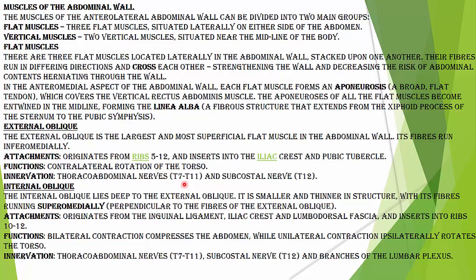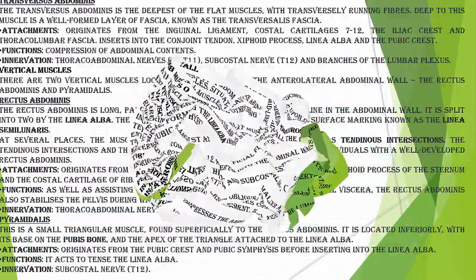Internal oblique present hota hai deep to the external oblique aur small aur thinner hai. Originate hota hai inguinal ligament se aur attach hota hai 10th, 11th, 12th ribs mein. Iska function hota hai ye torso ko same side pe rotate karta hai. Iski innervation hai thoracolumbar nerves, subcostal nerve, branches of lumbar plexus.